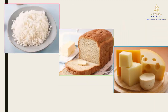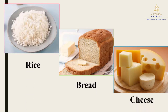We have here more kinds of food. The first one: rice, bread, cheese. Okay, listen. Rice, bread, cheese. Now repeat after me. Rice, bread, cheese. That's good.